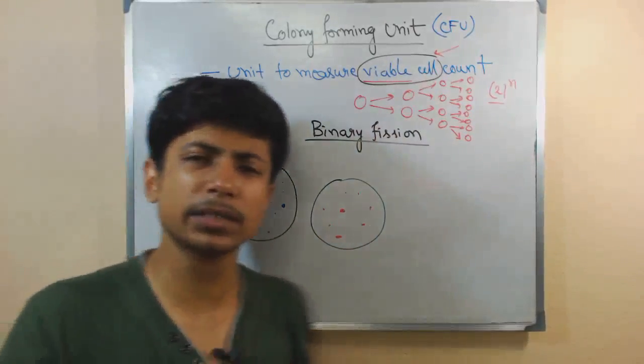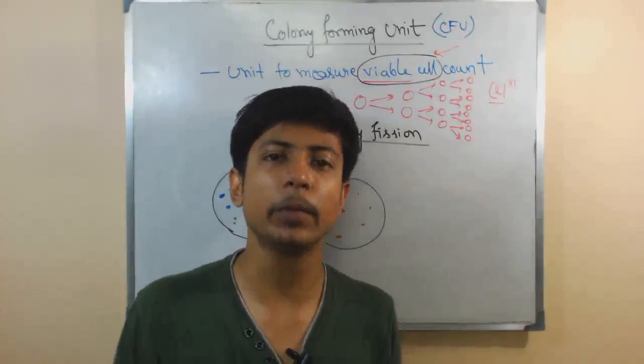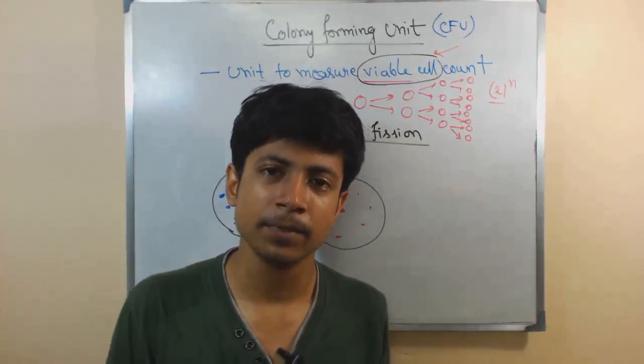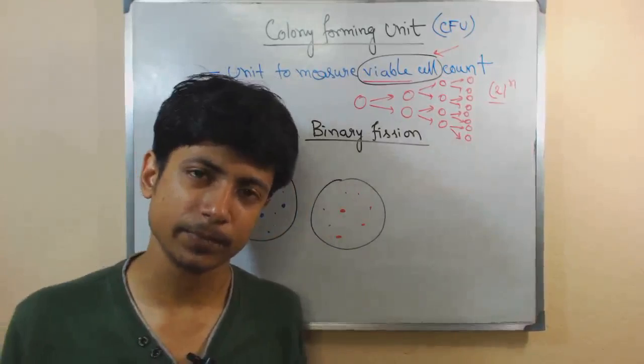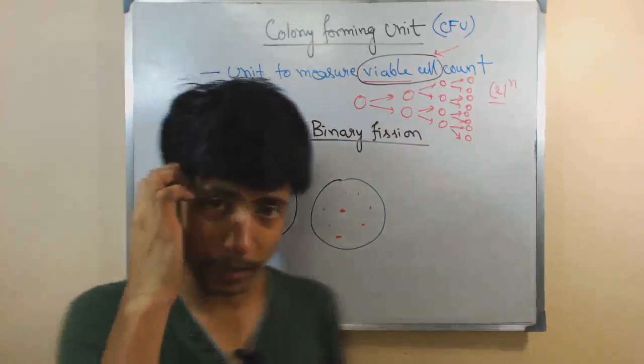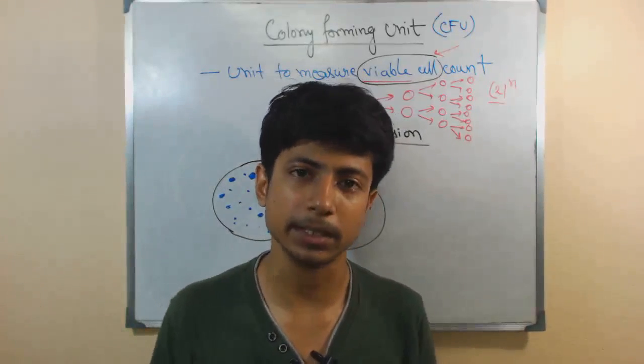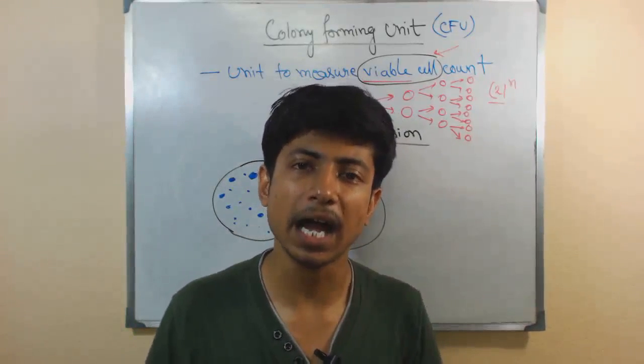Another very important thing: why is it a viable cell count measure? Because we can actually measure the presence of bacteria in many ways—microscopic analysis and also this process. In microscopic analysis, after staining, we kill all the bacteria because during staining the bacteria are dead.